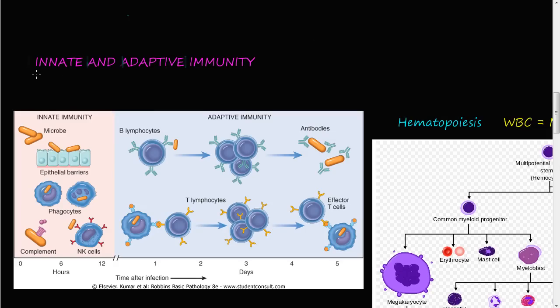In this video we will discuss the innate immune system. The immune system can be categorized into the innate and the adaptive. In the previous video I mentioned we have to separate them to discuss them, but these processes are occurring simultaneously. In this video we will talk about just the innate immune system.